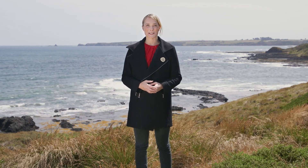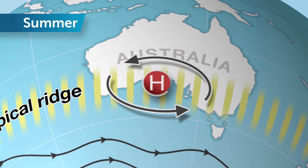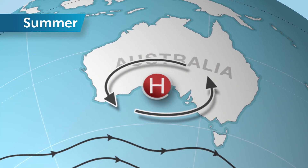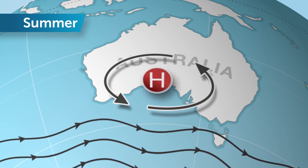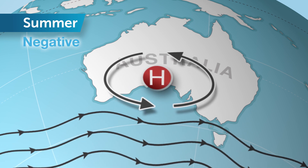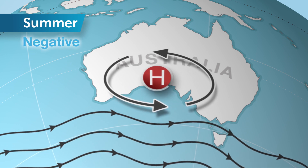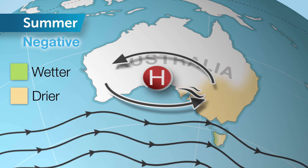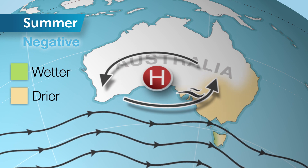The impact of SAM is opposite in summer, when the subtropical ridge is at its southernmost position and the influence of the westerly winds on our rainfall decreases, because they are further away from our coastline. But if the winds do shift north in summer — a negative SAM — more dry air from the interior blows over eastern Australia, resulting in below average rainfall.